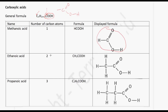In the case of ethanoic acid, we have two carbon atoms. Remember, we have a carbon atom in the functional group and another carbon atom, so we use N as 1 in this case. This gives us CH3COOH. You have one carbon atom here and one carbon atom here, and this is the displayed formula for ethanoic acid.